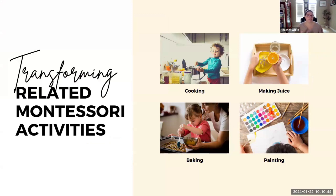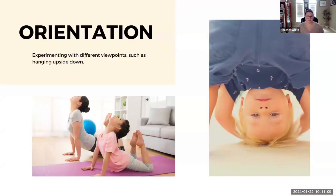If a child is in a transforming schema, some things they might enjoy are helping you cook — there's so much mixing and combining involved in cooking and baking — making fresh juice by squeezing an orange or lemon to make lemonade, and painting, particularly finger painting, where they're mixing all the colors together, which would be really engaging and rewarding for a child in a transforming schema.